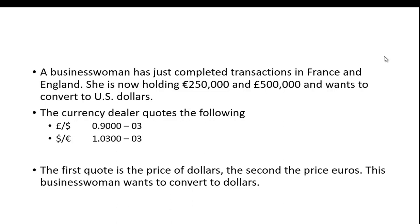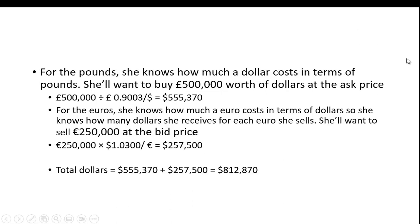The first quote is the price of dollars; the second is the price of euros. This businesswoman wants to convert to dollars. For the pounds, she knows how much a dollar costs in terms of pounds, so she'll want to buy 500,000 pounds' worth of dollars at the ask price. We take 500,000 pounds and divide by the ask price of 0.9003 pounds per dollar, giving us $555,370. For the euros, she knows how much a euro costs in terms of dollars, so she'll sell 250,000 euros at the bid price of $1.03, receiving $257,500.